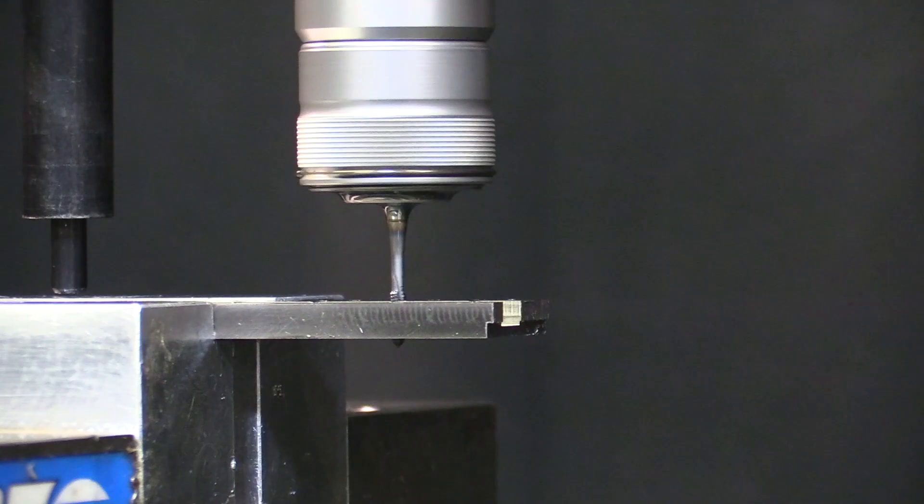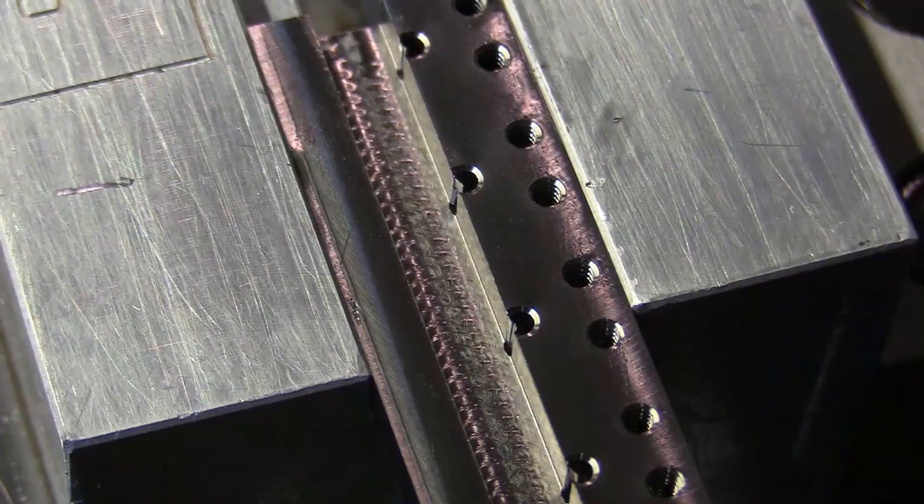This part specifically had 18 holes that he was thread milling and that part was taking three hours to mill. So the flex arm is literally going to be able to double his output, resulting in more parts out of the shop and growth for his company.